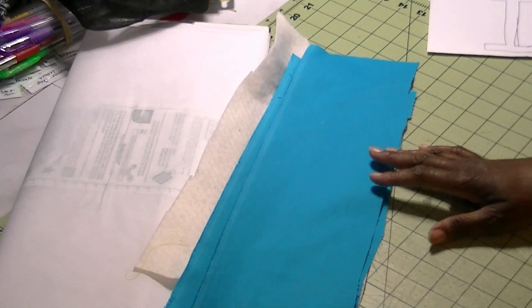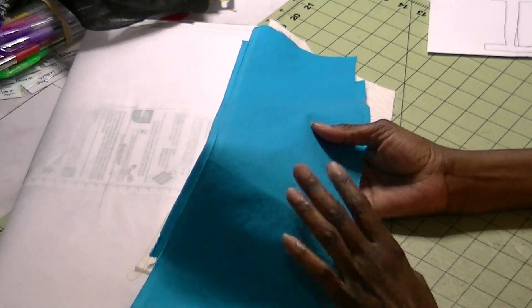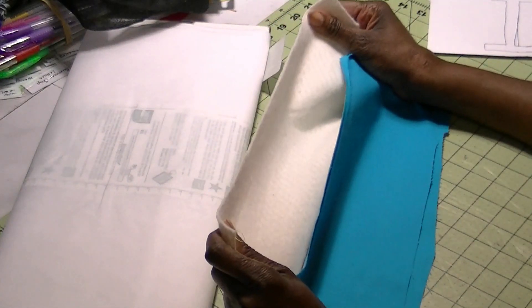there's a few things we're going to need. What we have is just some simple cotton fabric. I have some cotton batting.